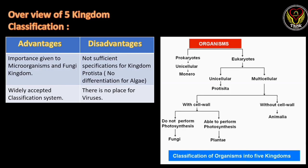The advantages of this classification include importance given to microorganisms and fungi. Before this classification there was no separate kingdom for fungi, but in the five kingdom classification a separate kingdom was given for fungi. Many microorganisms are also classified clearly, and it is the widely accepted system of classification.